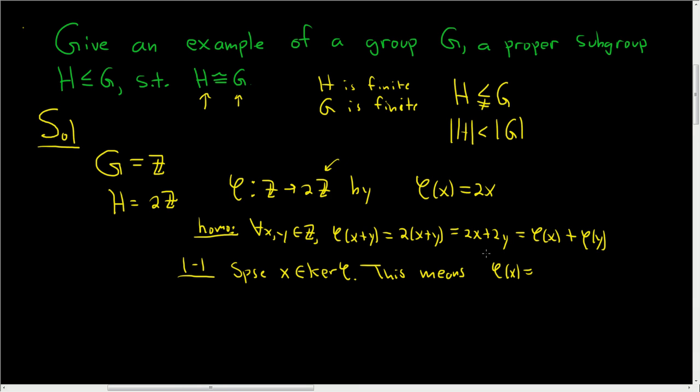Well, the identity in 2Z is just 0, the number 0. And so this means that 2x is equal to 0, and so x is equal to 0. So this shows that the kernel of phi is just the identity element, so 0 in this case. And so phi is one to one.